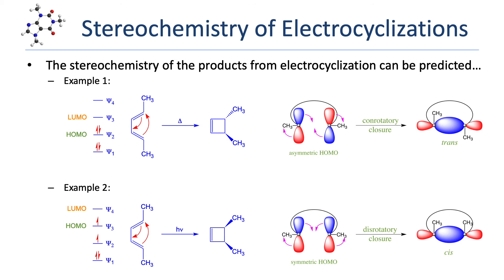In the second example, we again see trans-trans-2,4-hexadiene undergo electrocyclization, but now under photochemical conditions. As before, we make certain that the two ends of the pi system are close together, which again places the two methyl groups pointing outward. The reaction again gives 3,4-dimethylcyclobutene, but now forms the cis-stereoisomer.